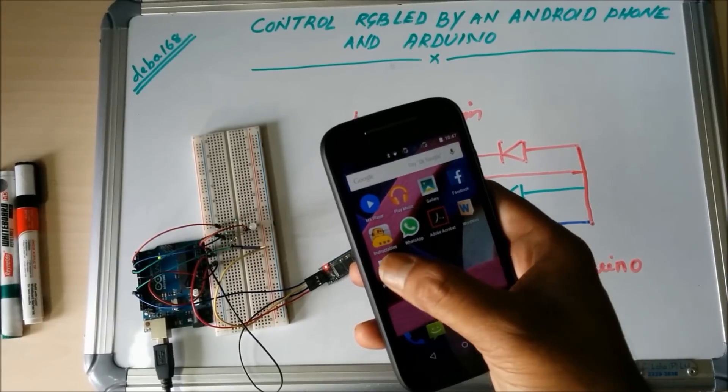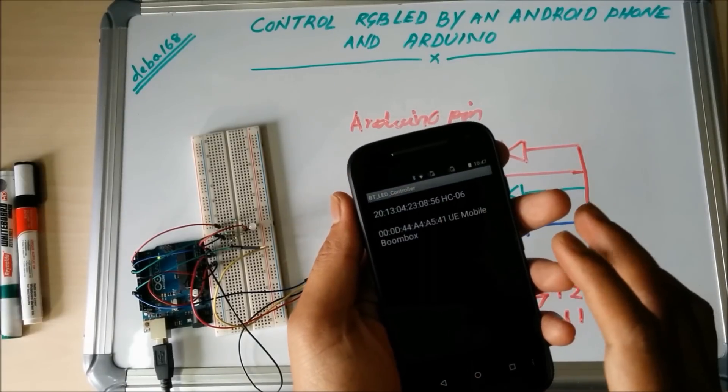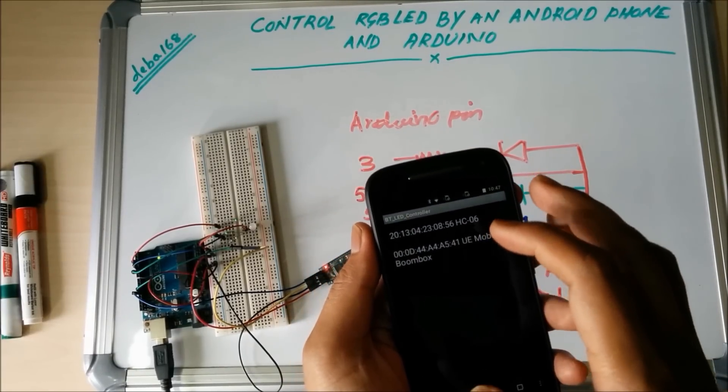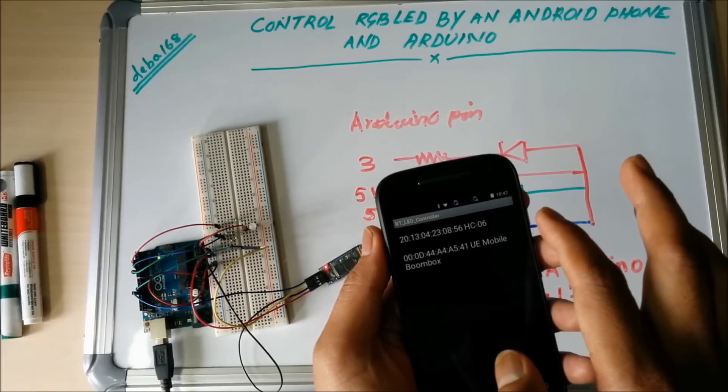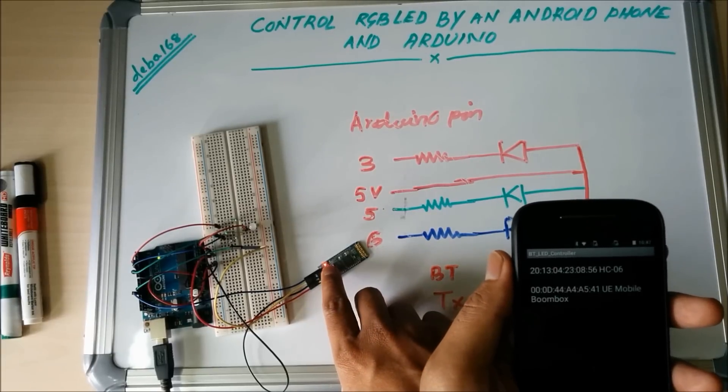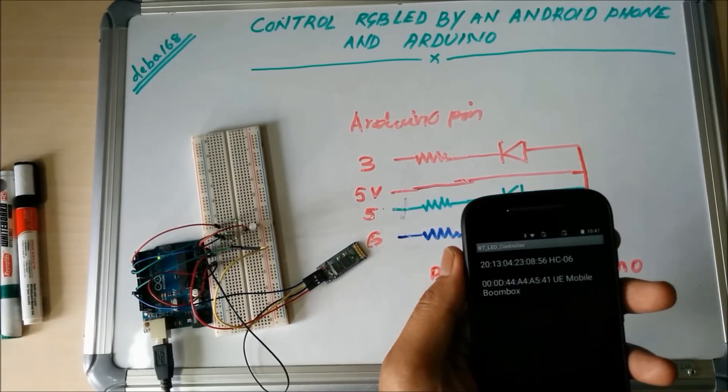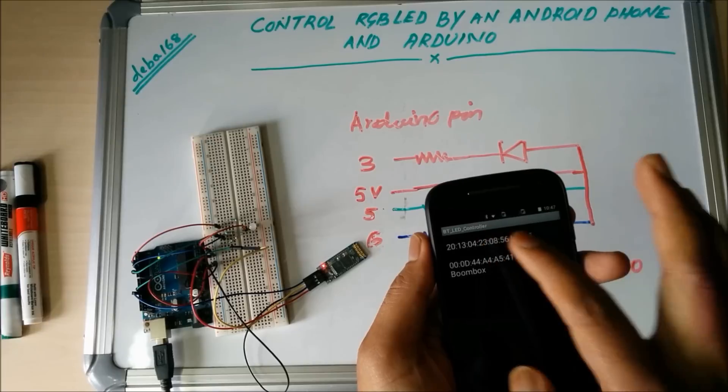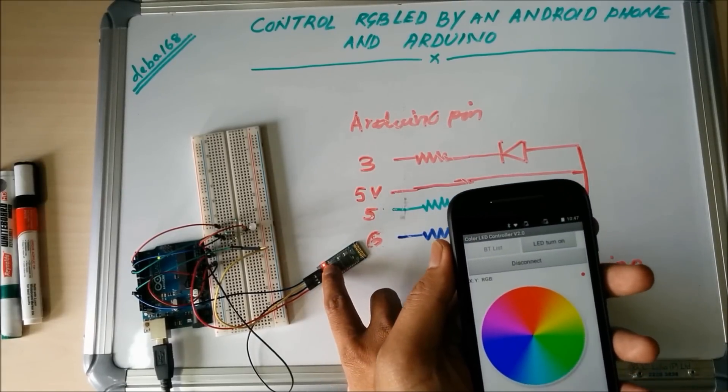Now open the app. Click on BT list. You can see different devices near to my mobile. The first one is HC-06, the Bluetooth module. And one thing, see the LED is blinking before connecting to mobile. Click here for connection and wait for some time. Yes, now it is connected. The LED is now constantly on.